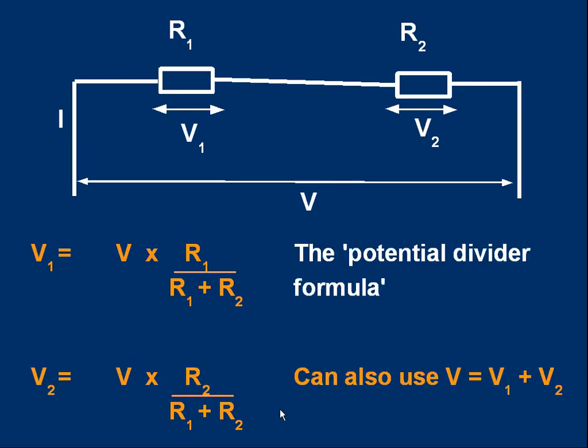Summarizing that again, V1 is V times this fraction, R1 over R1 plus R2. Similarly, the voltage across V2 is the full voltage V times, well, the fraction will be R2 over R1 plus R2. This is the potential divider formula. Don't forget, of course, you don't have to use it twice to get V1 and V2. V1 and V2 have got to add up to the voltage V. Once you've got V1, you can subtract it from V to get V2.